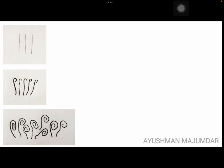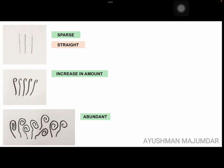This is the diagrammatic representation of the pubic hair. In stage 2, the hairs are sparse. In stage 3, they increase in amount. And in stage 4, they become abundant. Stage 1 means pre-adolescent pubic hair. In stage 2, the hairs are straight. In stage 3, the hairs have just begun to curl. And in stage 4, the hairs have become curly.